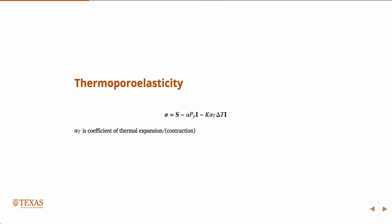We've talked about poroelasticity, where you have your normal stress tensor, and then you subtract off the effects of the pore pressure and the bio-coefficient. But you can also have effects due to temperature. In this case, K is the modulus, alpha-T is the coefficient of thermal expansion, so it's a material property.